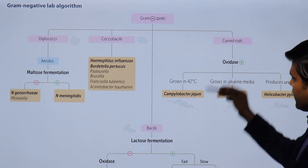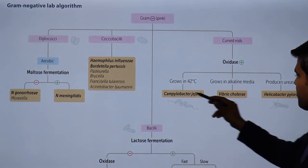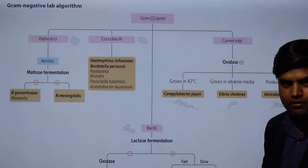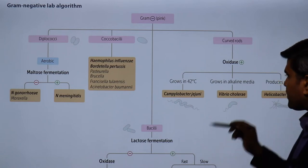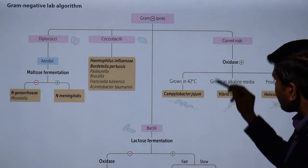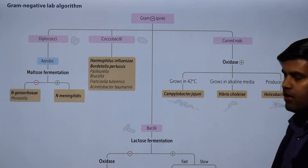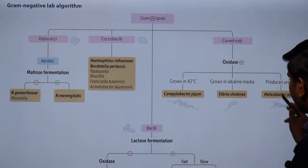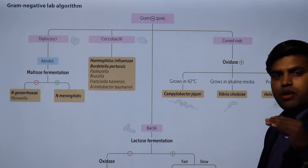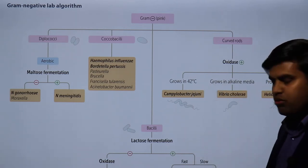Moving to curved rods — they are also bacilli but curved in shape. Three medically important ones: Campylobacter jejuni causing gastroenteritis, Vibrio cholerae causing cholera, and Helicobacter pylori causing peptic ulcers. They are all oxidase positive. Campylobacter jejuni can be differentiated because it grows at 42°C, whereas neither Vibrio cholerae nor Helicobacter pylori grow at 42°C — they grow at 37°C.